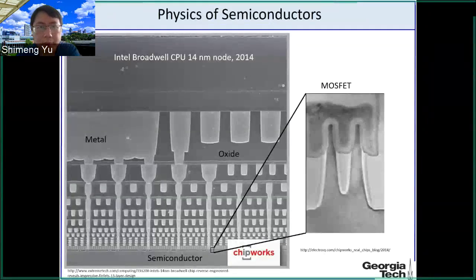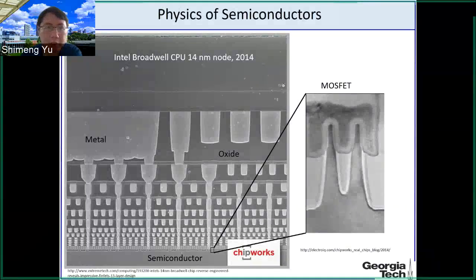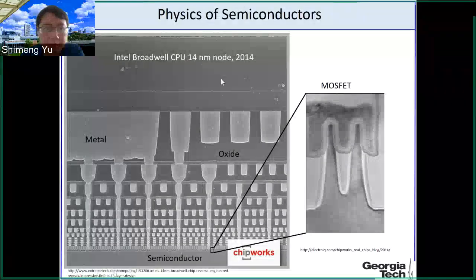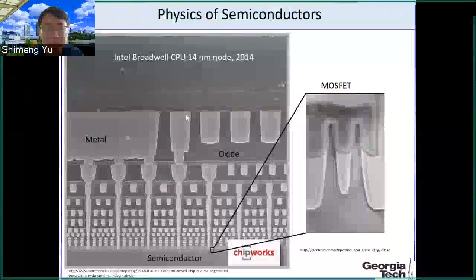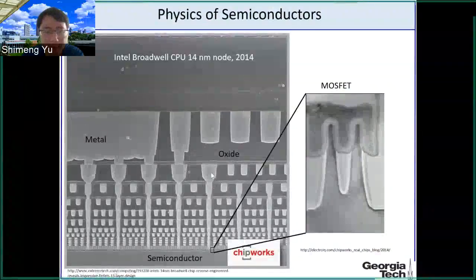You have seen this microscopic image a couple of times so far in this course. This is Intel's Broadwell CPU at 14 nanometer node, introduced in 2014. This is a cross-sectional view of the chip if you cut it into slices. We talked about the metal interconnect in Lecture 2.